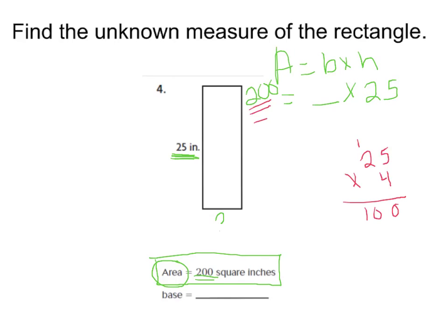Let's verify: 25 times 8. 5 times 8 is 40, regroup the 4 tens. 8 times 2 is 16, plus 4 is 20 tens. So I got 200. That means 8 times 25 is 200, so my missing measurement — the base — is 8 inches.